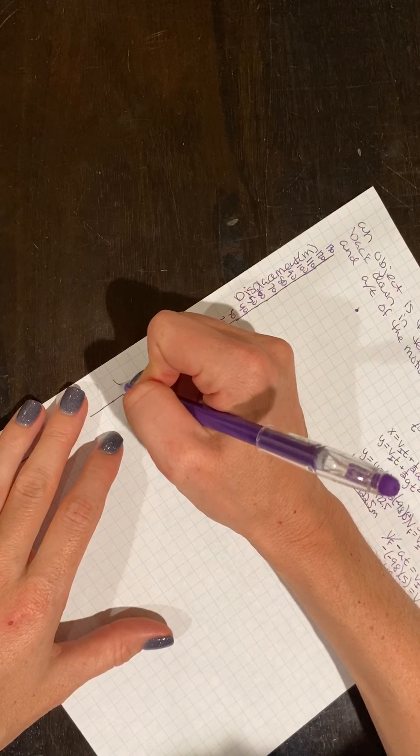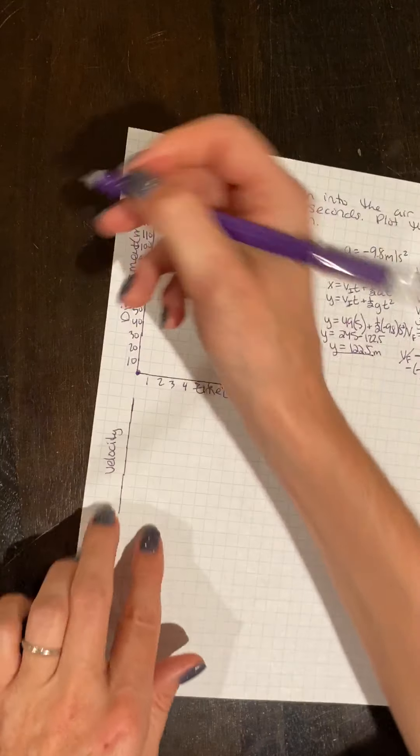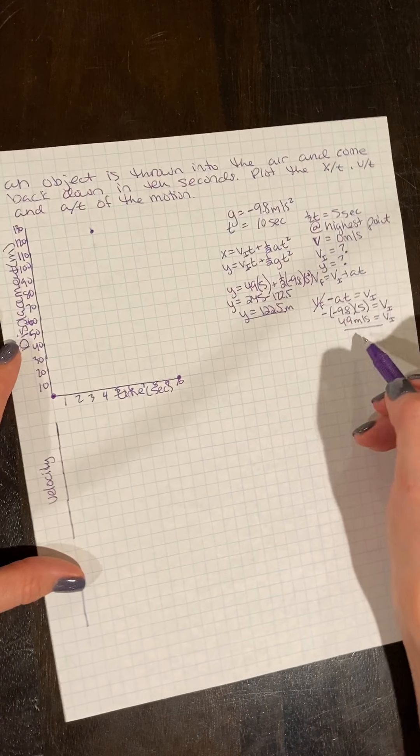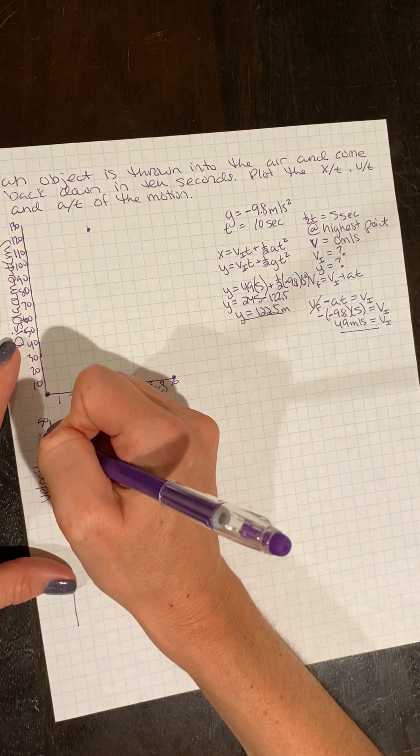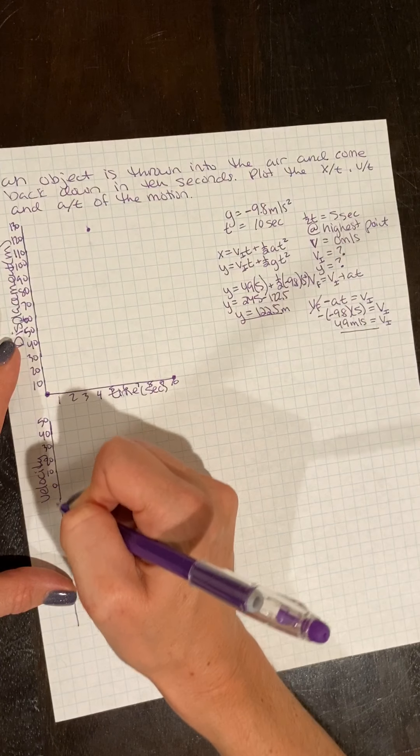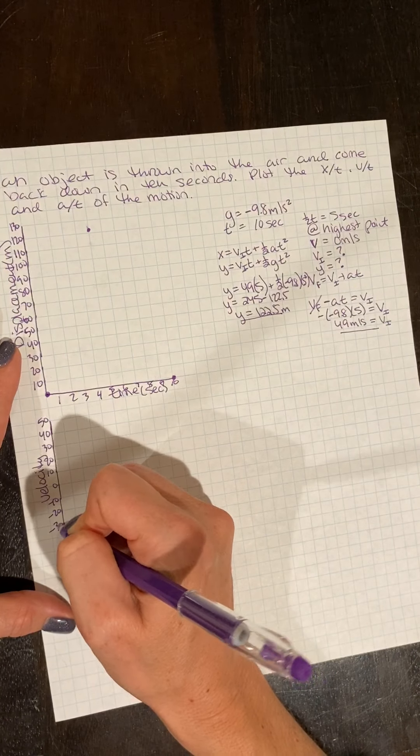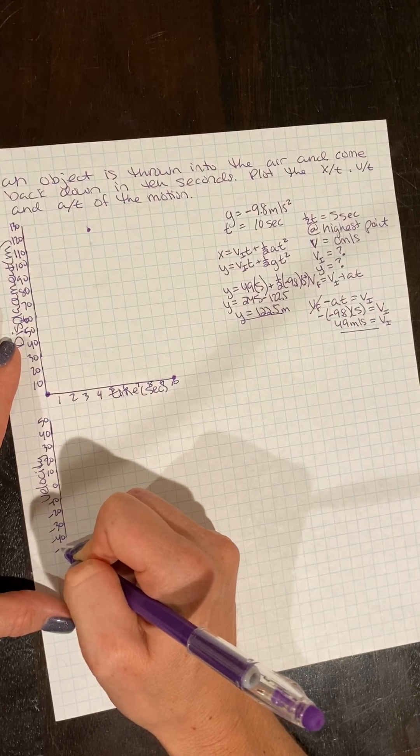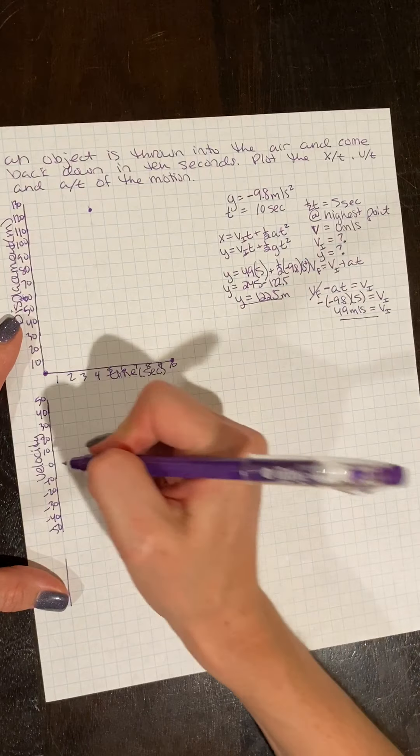This can be our velocity time graph. I know at the end of my flight, I know that my max velocity is 49. And I know that when I throw an object up, it's going to return to me with the same magnitude velocity, just negative.